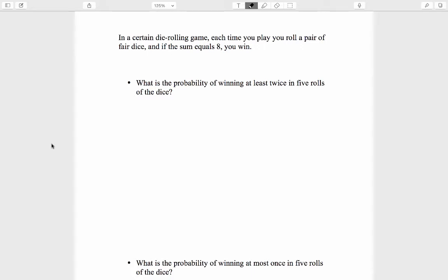What is the probability of winning at least twice in five rolls of the dice? The point of this question, and the follow-up question about the probability of winning at most once in five rolls, is to emphasize that everything we learned earlier in the course about the rules of probability still apply. This event, winning at least twice in five rolls of the dice, can be described as 2 or 3 or 4 or 5 wins.